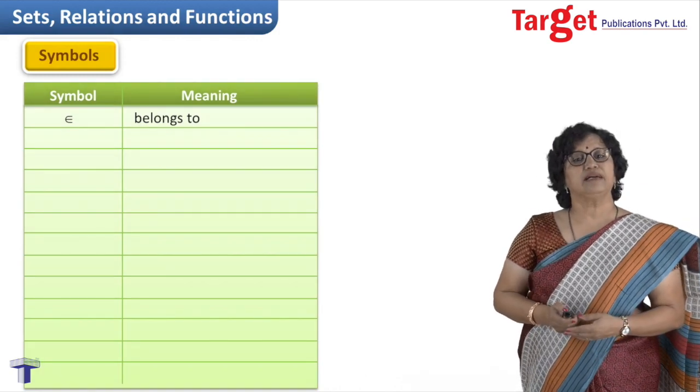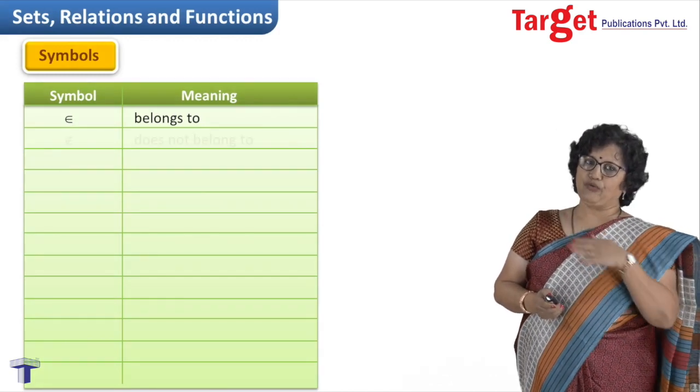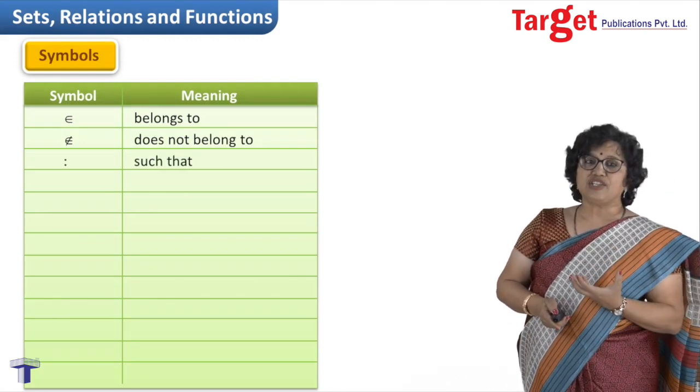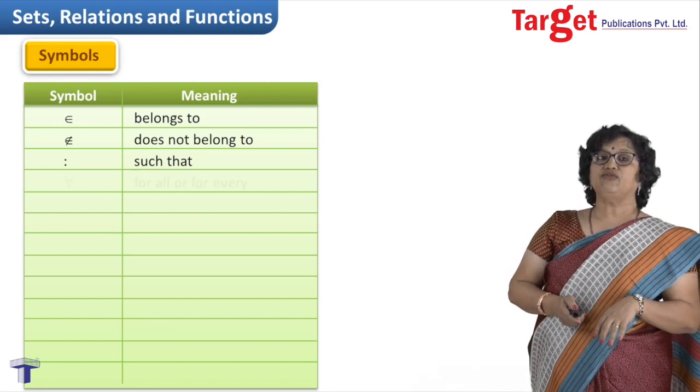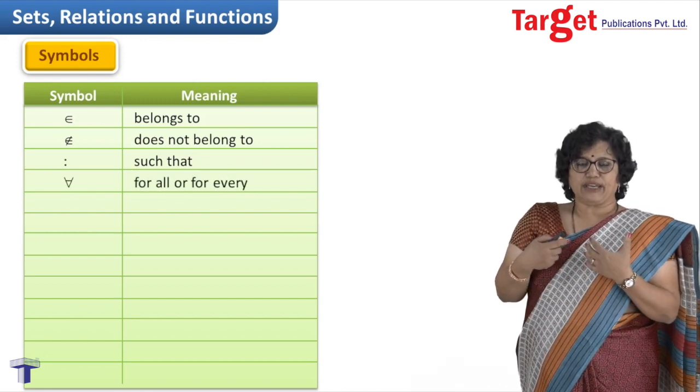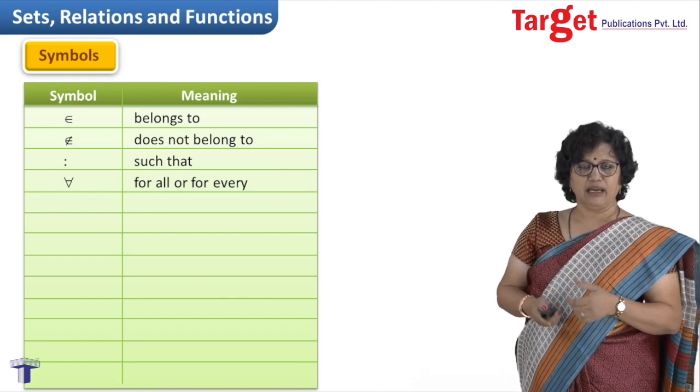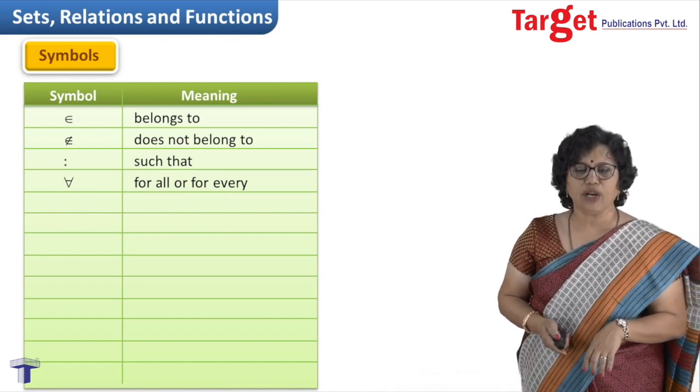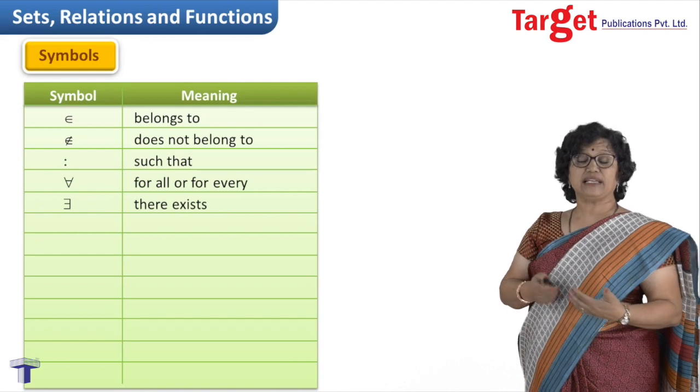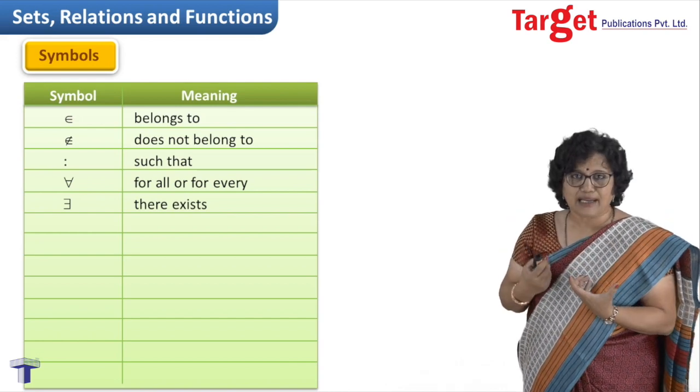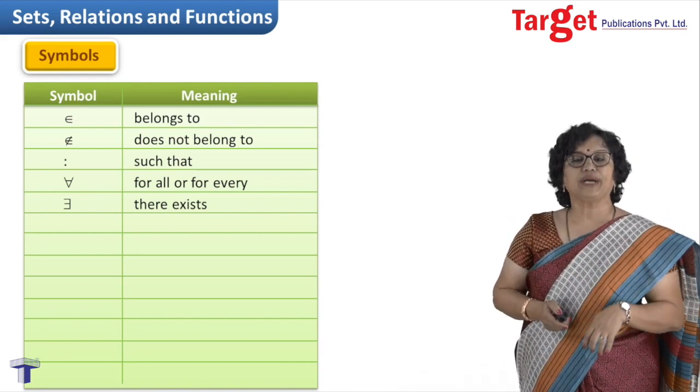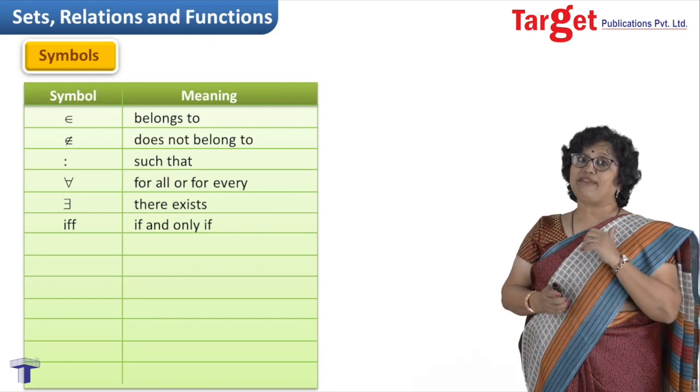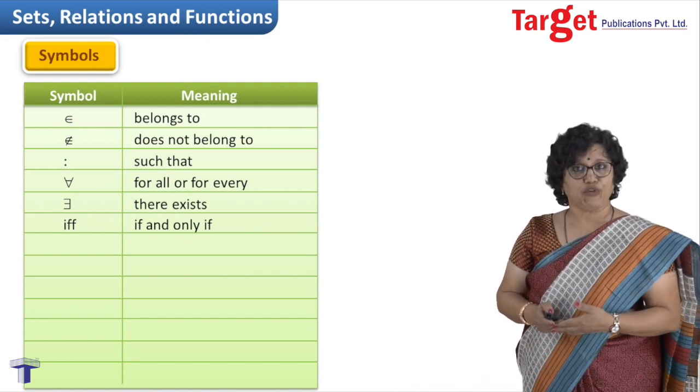Then my next symbol is 'does not belong to', shown by crossing that epsilon with a slash. Next is 'such that', shown by a colon. 'For all' - we say for all x, instead of writing it, I can use an inverted V cut by a horizontal line. 'There exists' - there exists such and such number which belongs to this set, shown as E in the reverse direction. 'If and only if' - you will realize we have used this notation before also, written as iff.